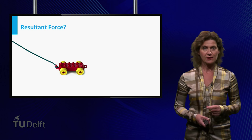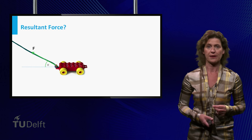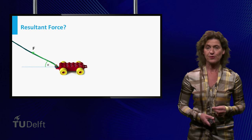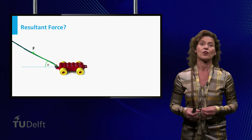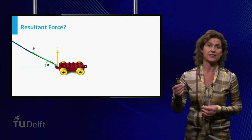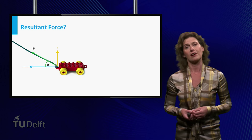Suppose the car is dragged along by a constant force F under an angle alpha. The force F can be decomposed into two perpendicular forces, a vertical force lifting the car and a horizontal one causing the car to move.